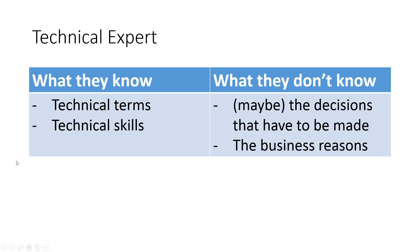A technical expert is an engineer — someone who is well trained, understands the project, and understands all the technical skills they need. They're interested in hard numbers. A very common reason a technical expert might review a document is to make sure all of the claims, experiments, or other data make sense before passing it on to management. They're looking for errors and making sure the document is written extremely well. They probably won't read a background section, and they may even skip over an introductory section — they'll go right into the details of the technical report.